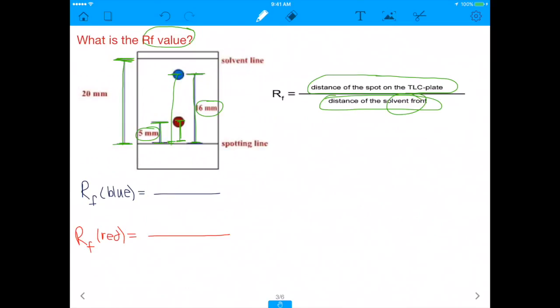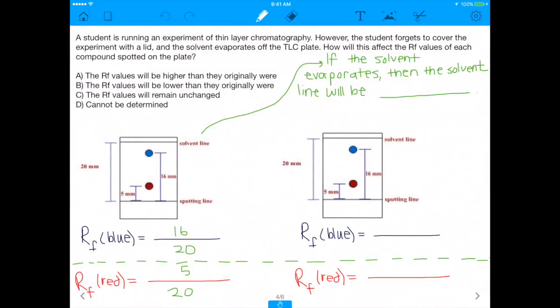So in this case, notice that the solvent has migrated 20 millimeters, and the red dot has migrated 5 and the blue dot has migrated 16. So if we wanted to know the RF value of the blue dot, you'd say the distance the spot migrated, which in the case of the blue dot was 16 millimeters, over the distance the solvent migrated, which was 20 millimeters. So the RF value would actually be 0.8, because that simplifies to 4 over 5. On the other hand, the RF value of the red dot is 5 millimeters over 20 millimeters, which simplifies to 0.25. So the RF values are pretty much dictated by the solvent front and the distance of migration.